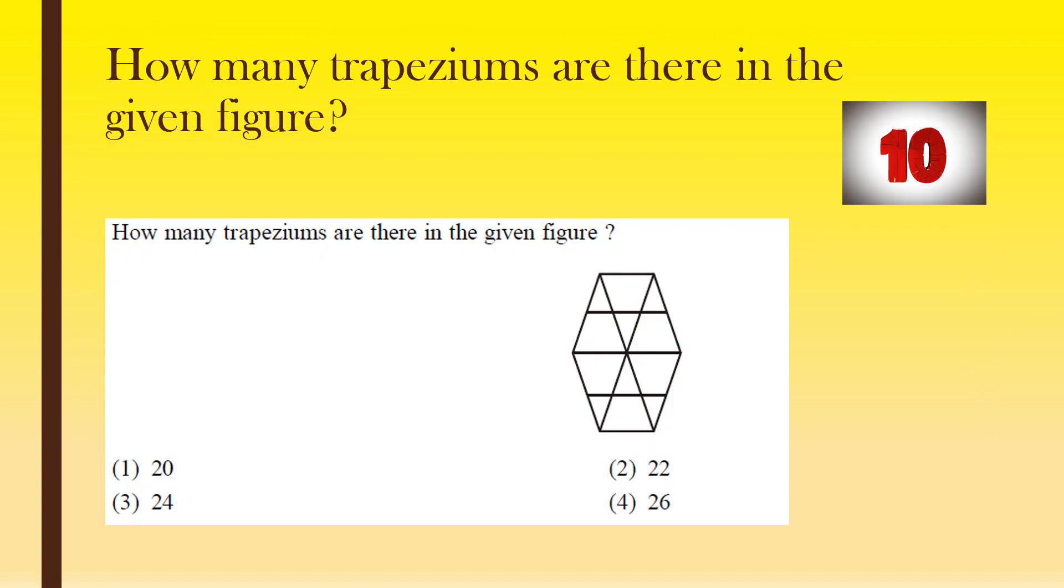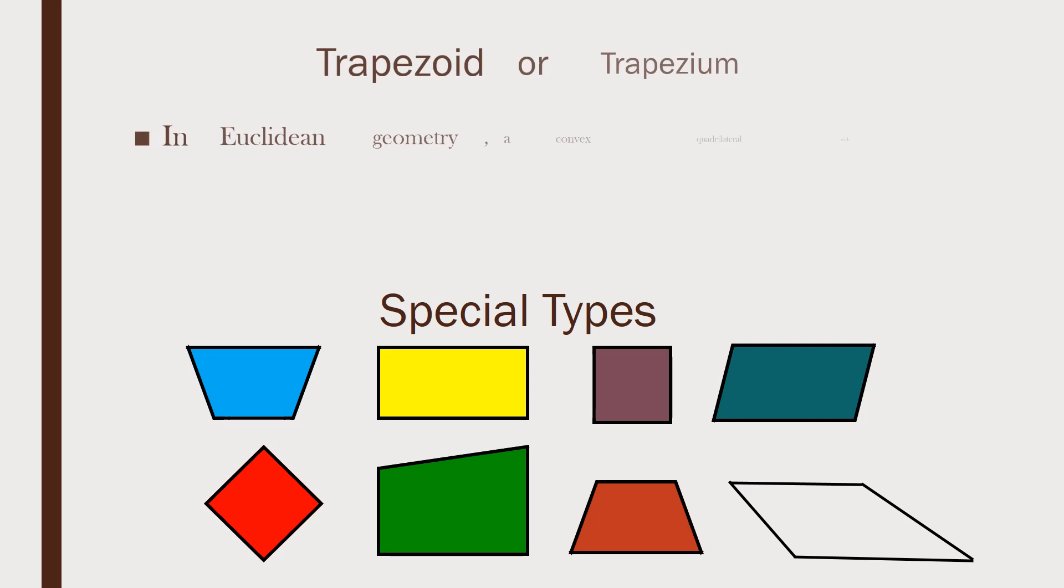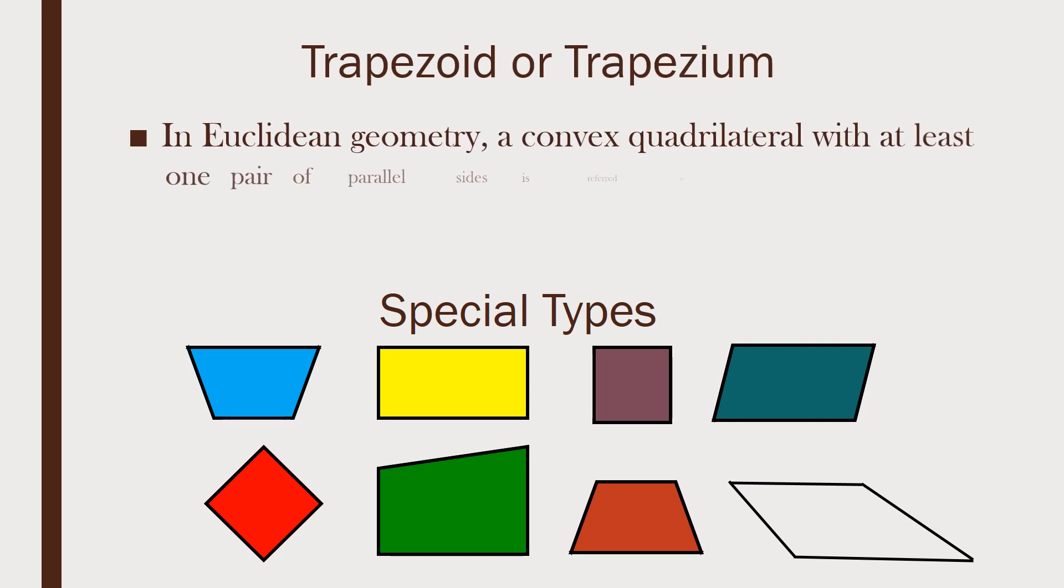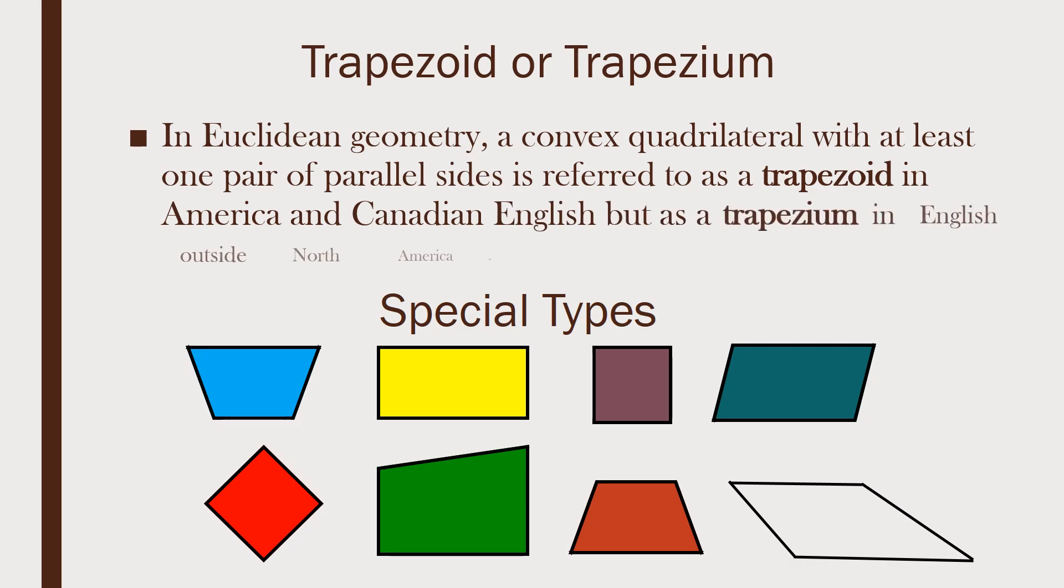Question four. How many trapeziums are there in the given figure?